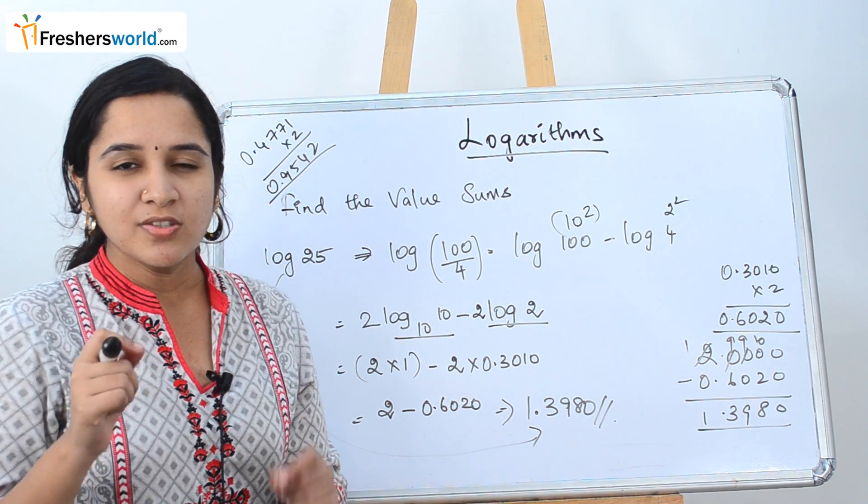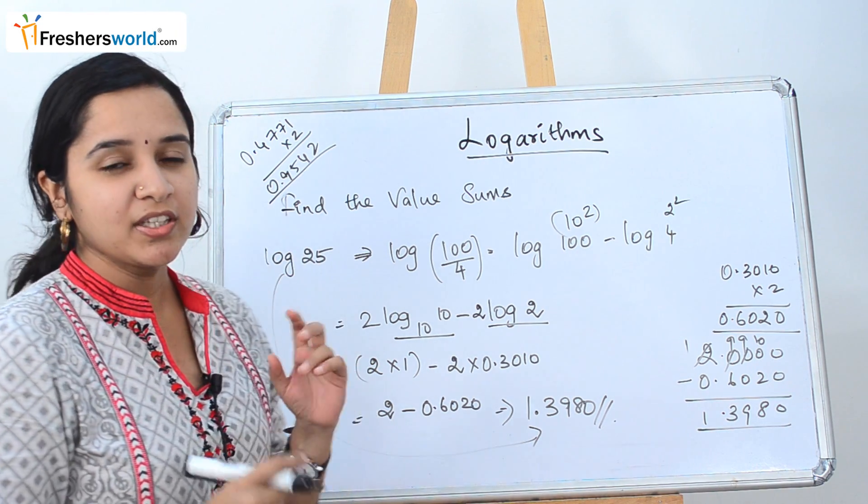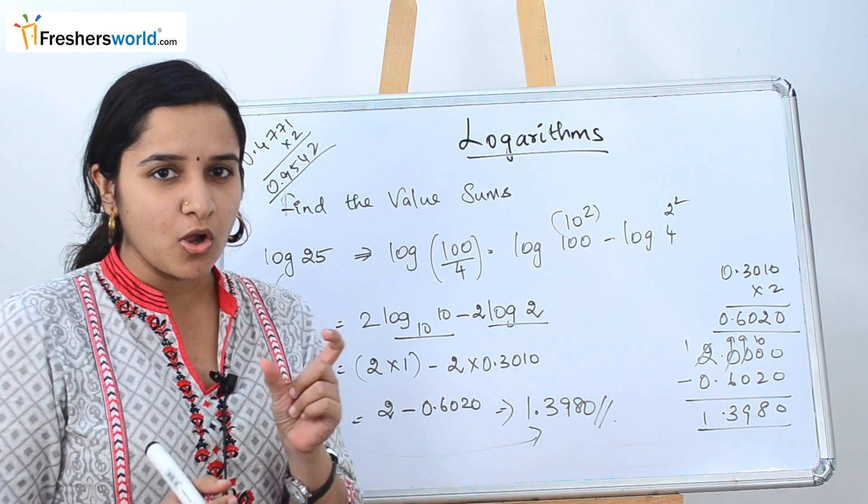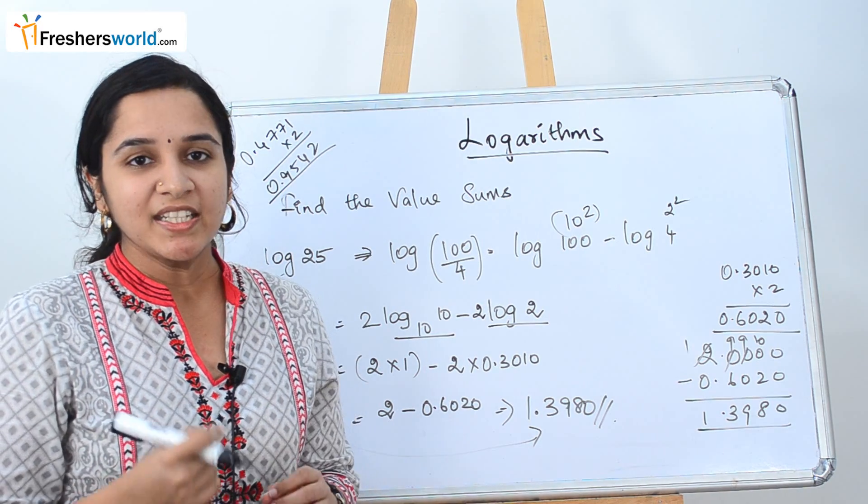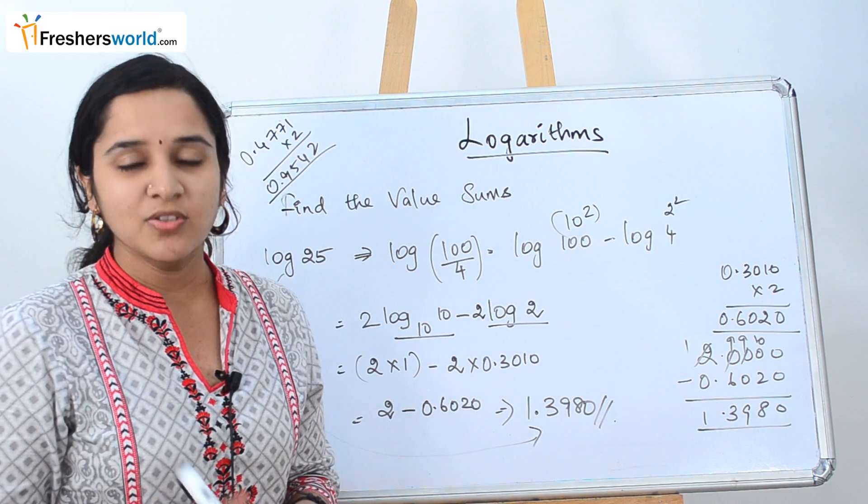The small tip is that always know the value of log 2 and log 3. Because once you simplify, they will always give it in a way that a log 2 or log 3 value can be used. Instead of knowing any tedious method, if you know these two values you can easily solve the problem. Let's go to another sum.